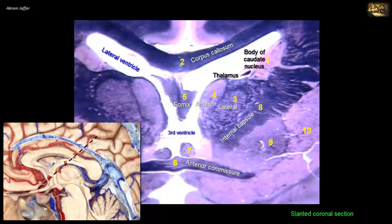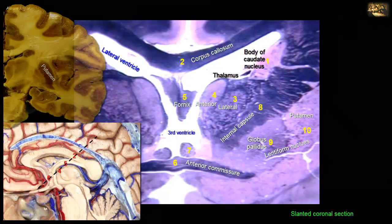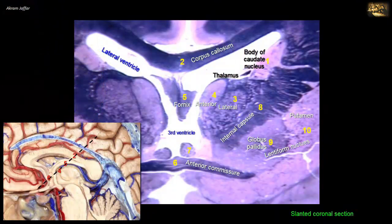The internal capsule separates the thalamus, number 3, from the gray matter of the lentiform nucleus. The lentiform nucleus is located lateral to the internal capsule and is wedge-shaped or lens-shaped, hence the name lentiform. It has a medial part called the globus pallidus, number 9, and a lateral part, the putamen, number 10. The globus pallidus is traversed by numerous myelinated axons, giving it a pale appearance in fresh sections — hence the name globus pallidus, meaning the pale body. In this stain, its numerous fibers give it a darker hue than the laterally located putamen.